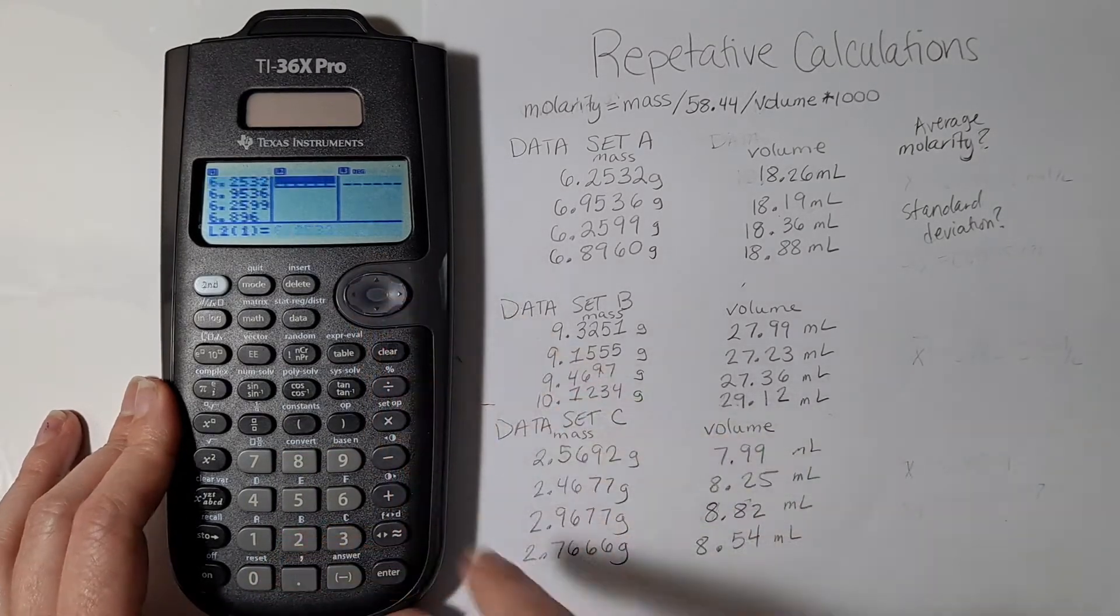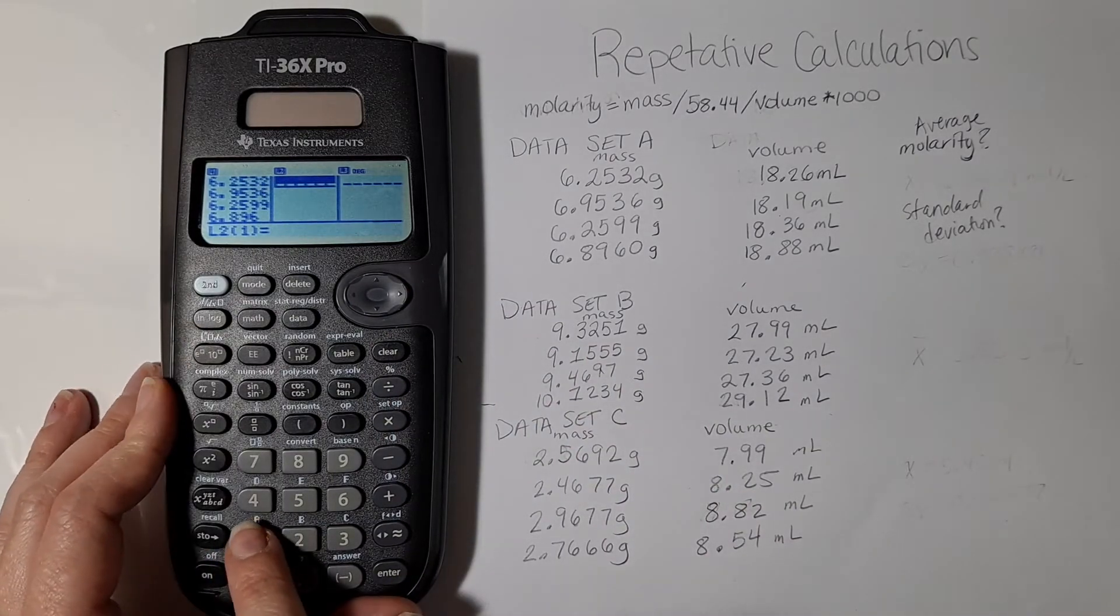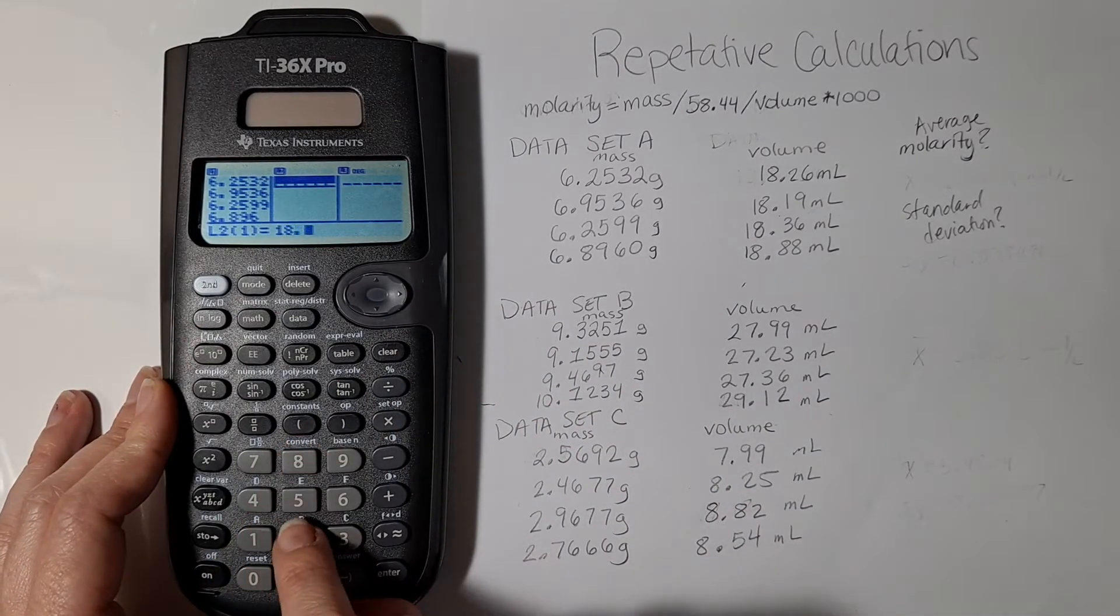Then I can come back over to list 2 and I can type in my volumes.